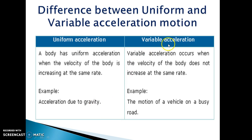Variable acceleration: Variable acceleration occurs when the velocity of the body does not increase at the same rate. For example, the motion of a vehicle on a road.